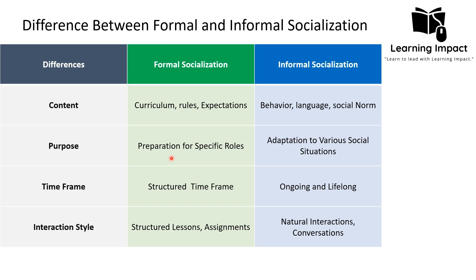Regarding purpose: the purpose of formal socialization is to prepare individuals for specific roles. For example, in an education institution, academic knowledge is taught based on an individual's interest area. As the lecturer notes, studying sociology at university was formal socialization because it prepared them for the specific role of sociology lecturer — formal socialization helps individuals attain the specific role they aspire to.